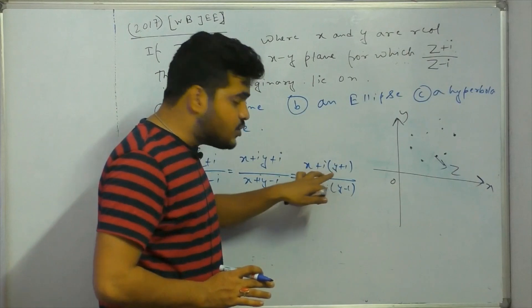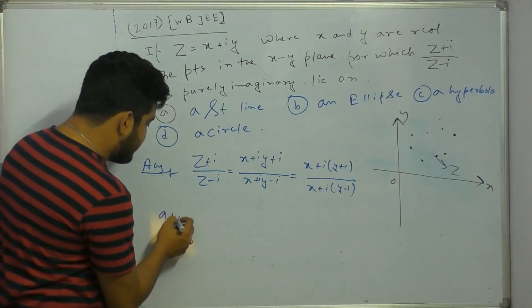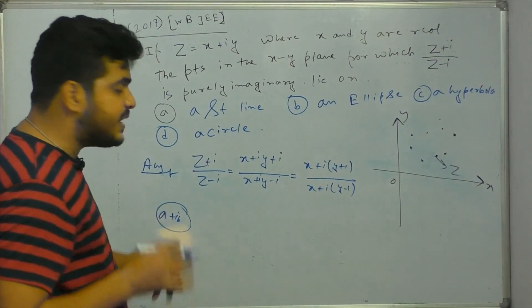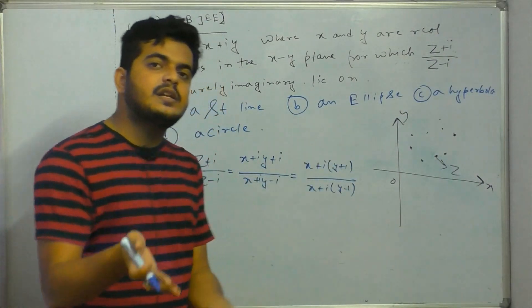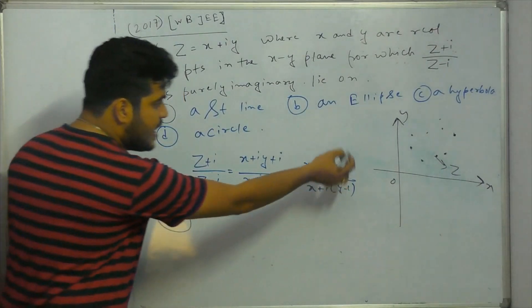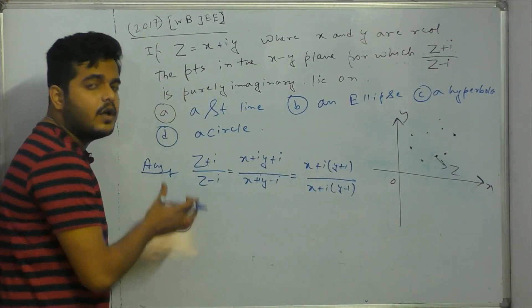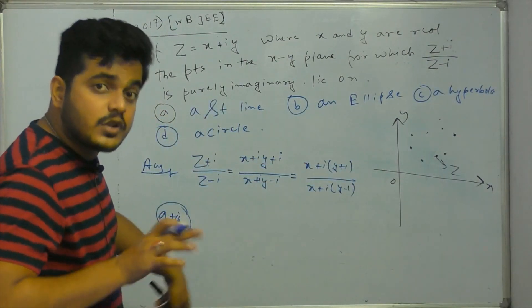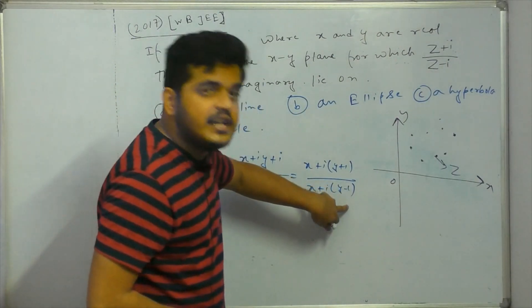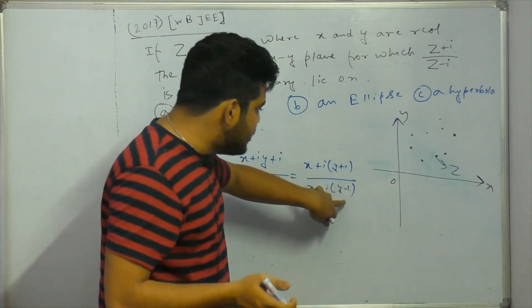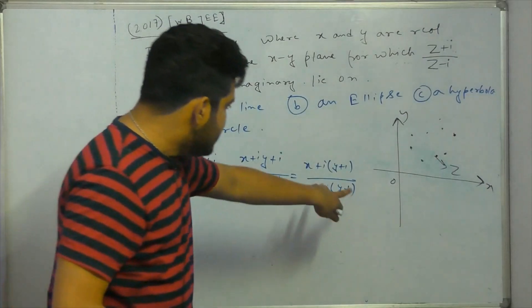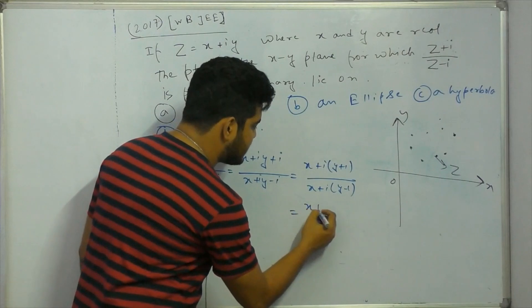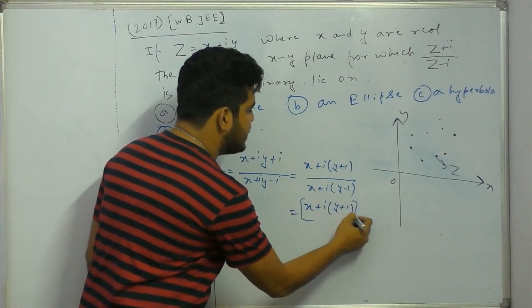If I write a complex the same way — a plus i into b. If I write a theory, I write a real. If I write a complex, I write a real. If I write a whole, then I write a plus i into b. If I write a complex, I write a real plus i into real. What do I write? x plus i into y plus 1.